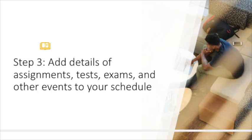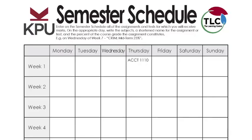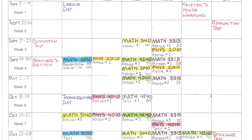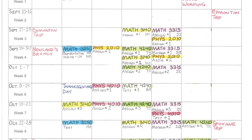Step three: go through the course presentation looking for important details and commitments that will take place in week one of the semester. This could include required course readings, homework, and assignments. On your semester schedule table, find the day of the week that these commitments need to be completed by and write them down. Make sure to include the course name, the details of the commitment, and what it is worth if it is a graded assignment.